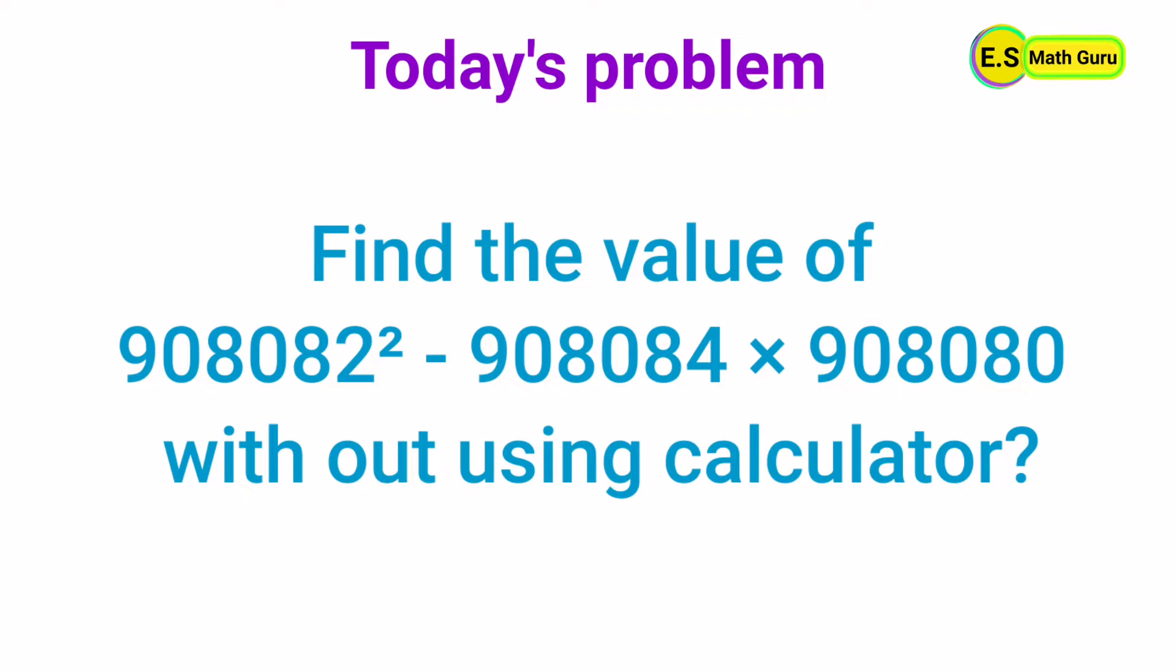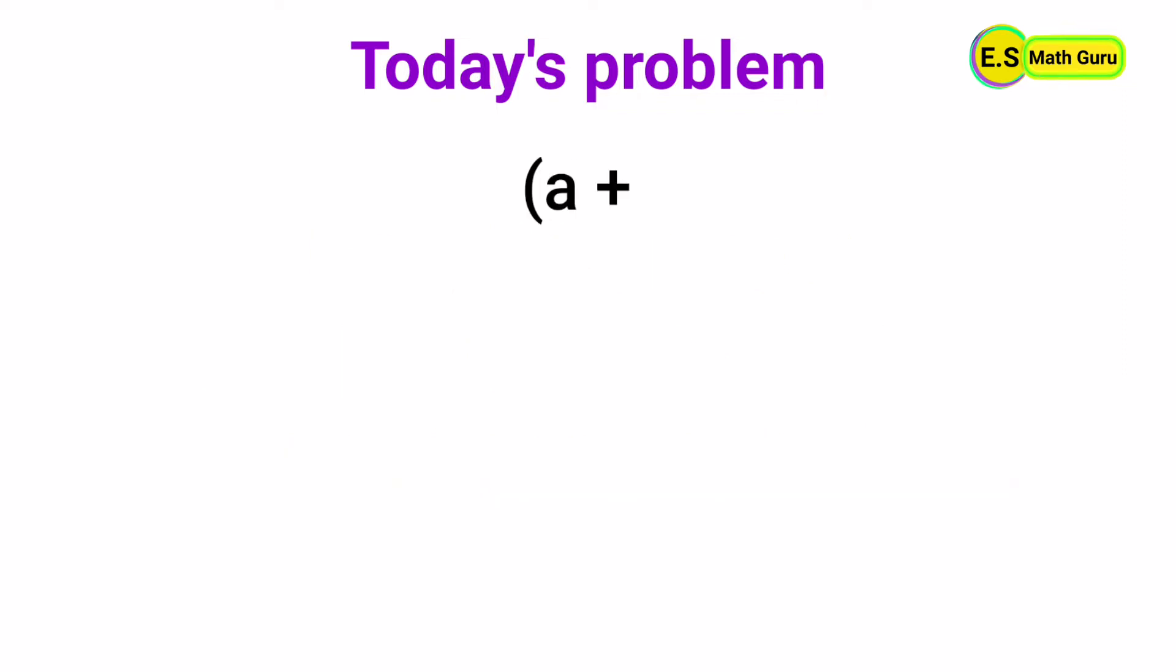Dear friends, we can find its value with the help of an algebraic identity, that is a plus b times a minus b equals a squared minus b squared.